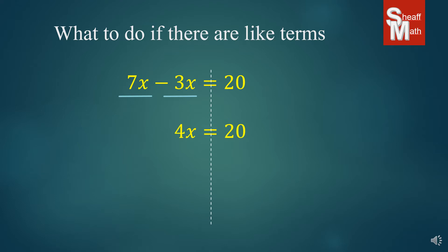And then we bring down the equals 20. Then we divide by 4, and x equals 5.